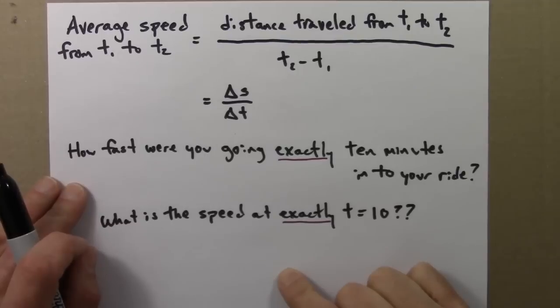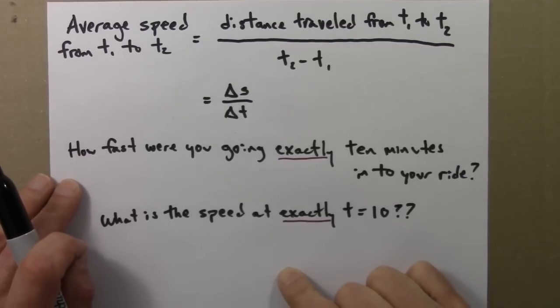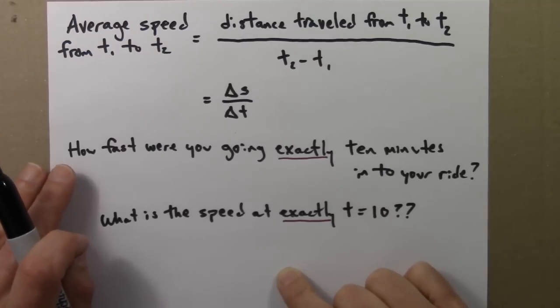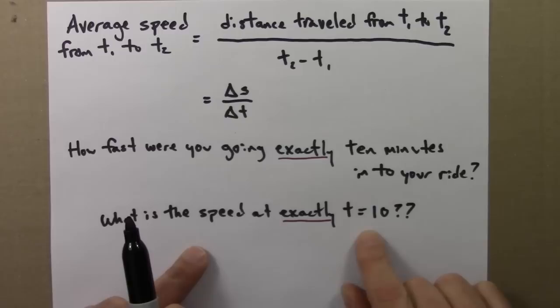The question is, how fast were you going exactly 10 minutes into your ride? Not what's your average speed from 9 to 11, but at exactly t equals 10, what is your speed?